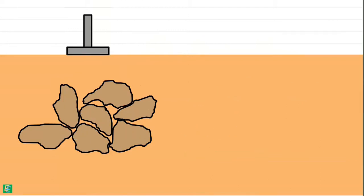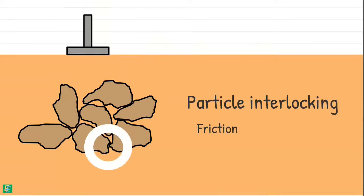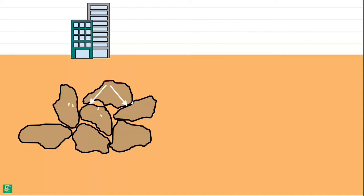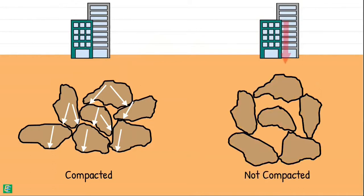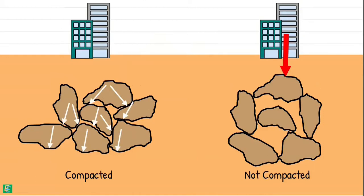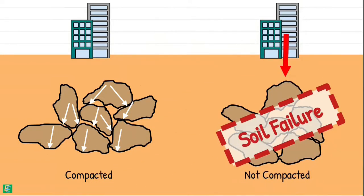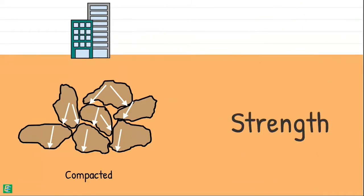Also, because of compaction, particles become interlocked, which creates friction and resistance to movement between particles. This closeness of particles allows the load to be distributed more efficiently across the compacted soil and reduces localized stress concentrations. This uniform load transfer helps prevent excessive deformation under applied loads, which is also called failure of the soil. Hence, strength of the soil is increased.